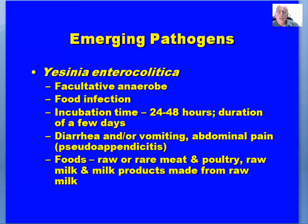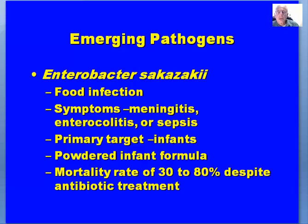Raw milk and milk products made from raw milk are also implicated with Yersinia. Of major concern for those with very young infants is Enterobacter sakazakii — a food infection whose symptoms can include meningitis, enterocolitis, or sepsis. The primary target is infants and powdered infant formula, particularly formula not processed at a high enough temperature. Liquid formulas that are canned reach high enough temperatures, but spray drying may not achieve a temperature sufficient to destroy this pathogen. The mortality rate is 30 to 80 percent even with antibiotic treatment.